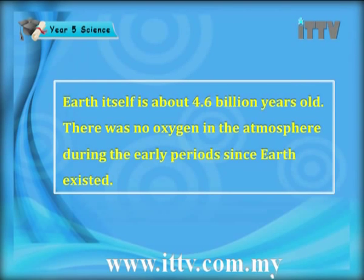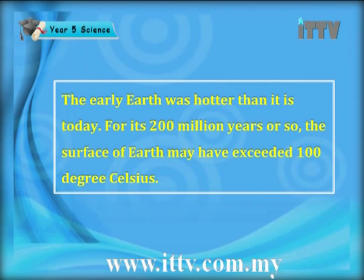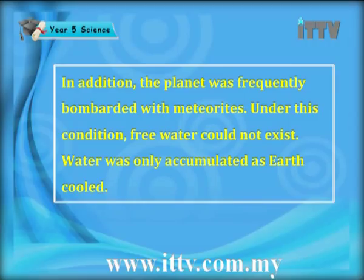Earth itself is about 4.6 billion years old. There was no oxygen in the atmosphere during the early period since Earth existed. The early Earth was hotter than it is today — for its first 200 million years or so, the surface of Earth may have exceeded 100 degrees Celsius. The planet was frequently bombarded with meteorites, and under these conditions free water could not exist. Water only accumulated as Earth cooled.